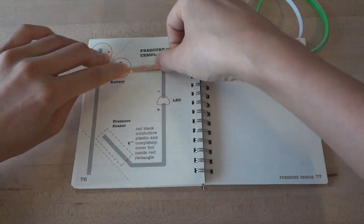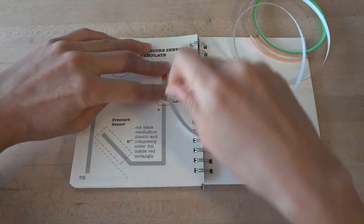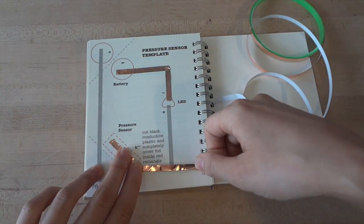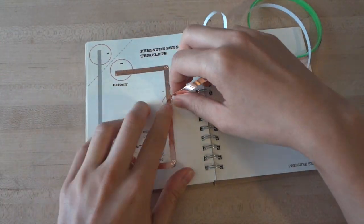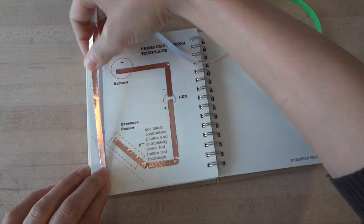First, stick conductive foil tape over the gray lines on your template. Remember to use continuous pieces of tape for each gray line, and to fold at the turns. Watch your fingers as the tape can be sharp.